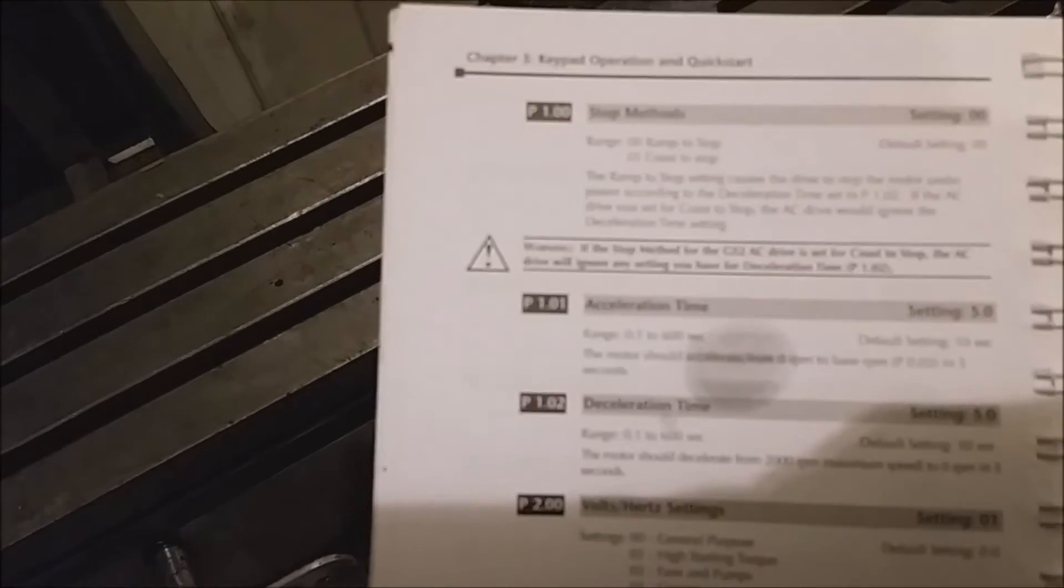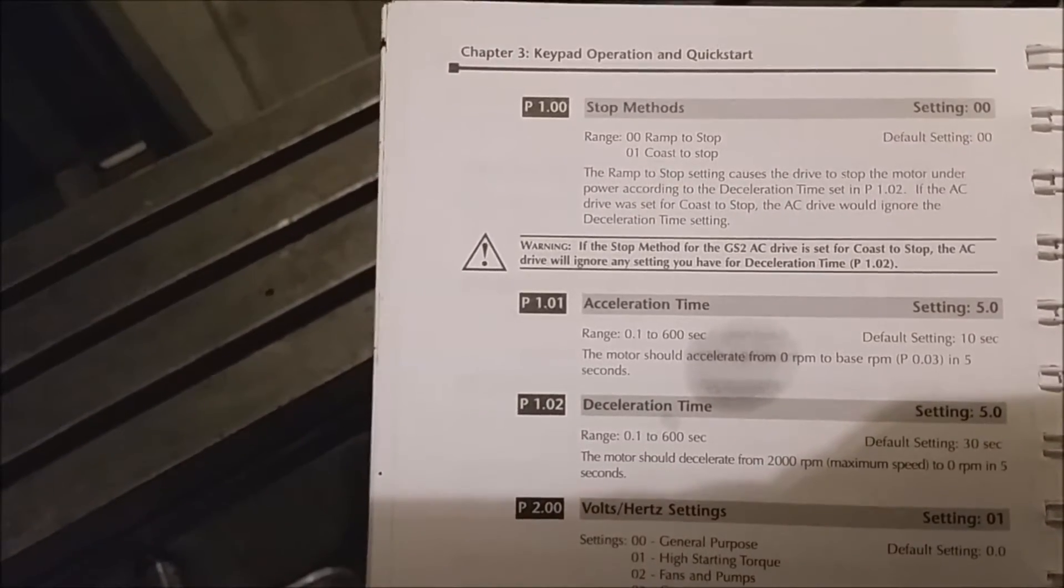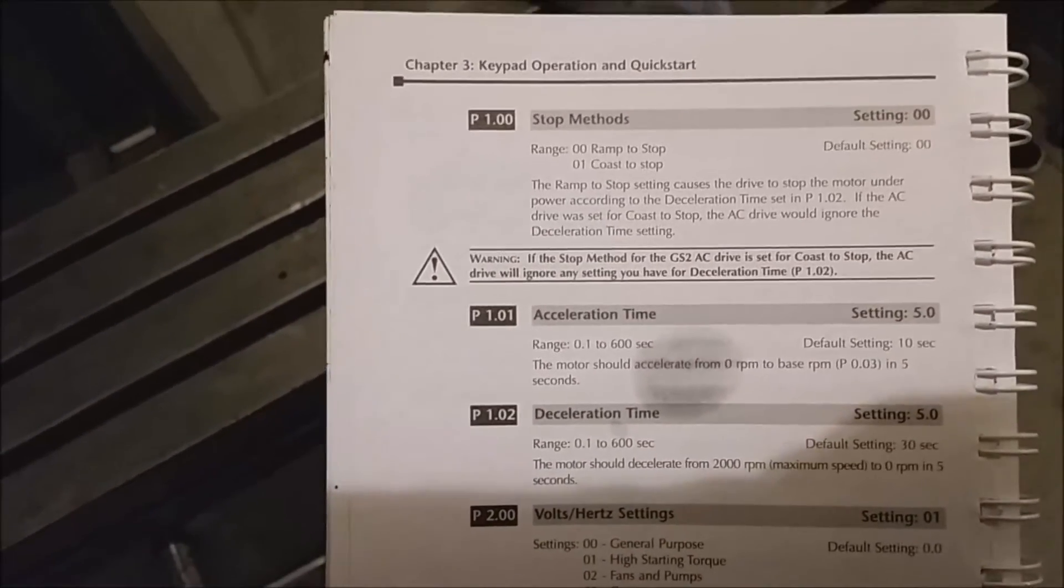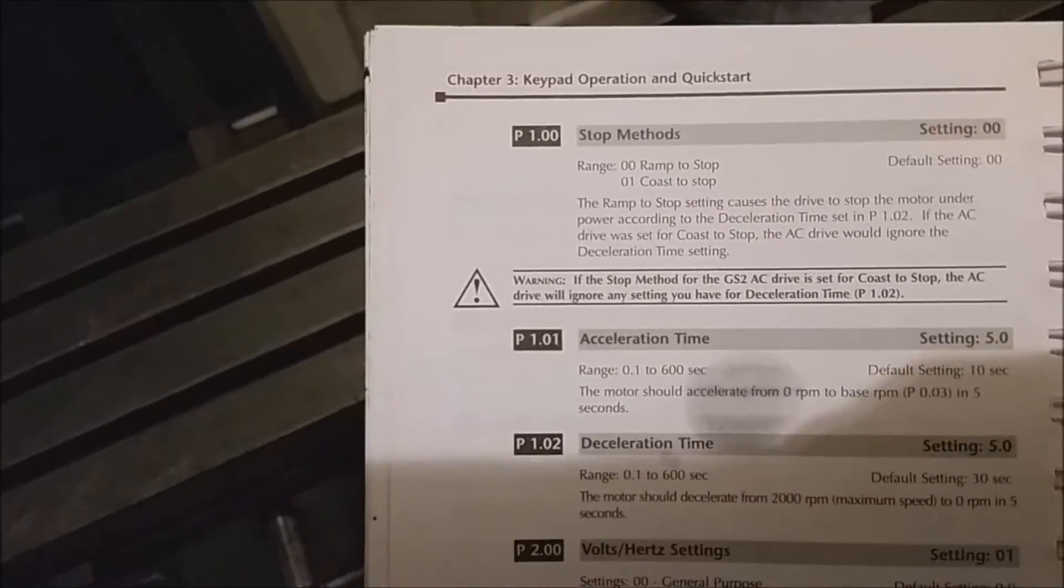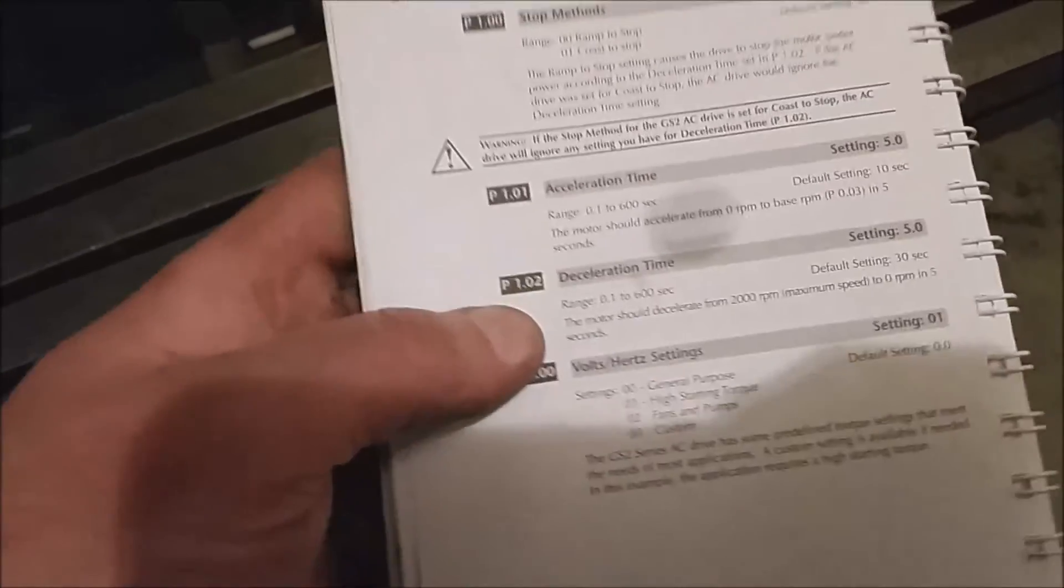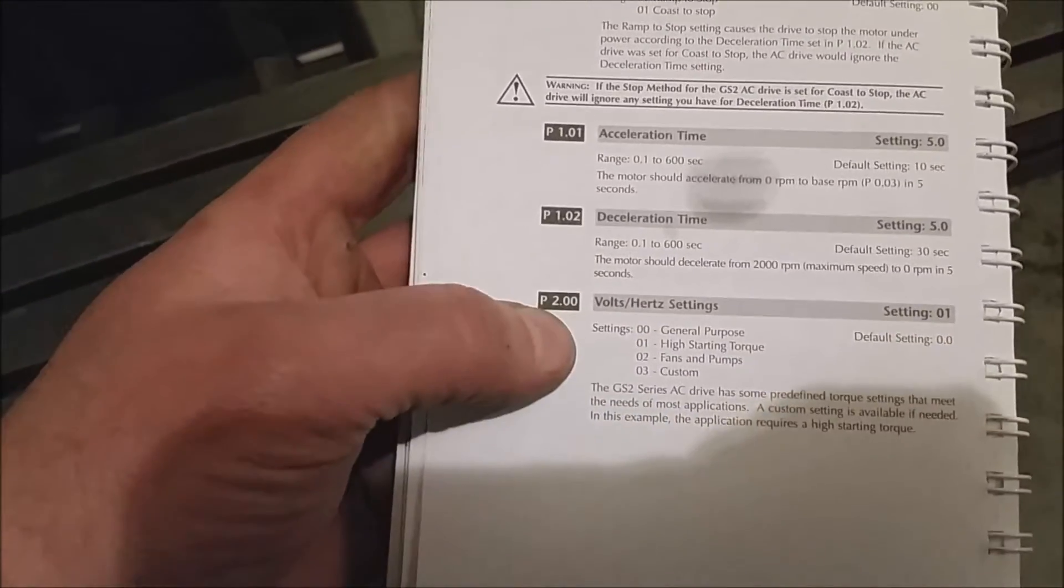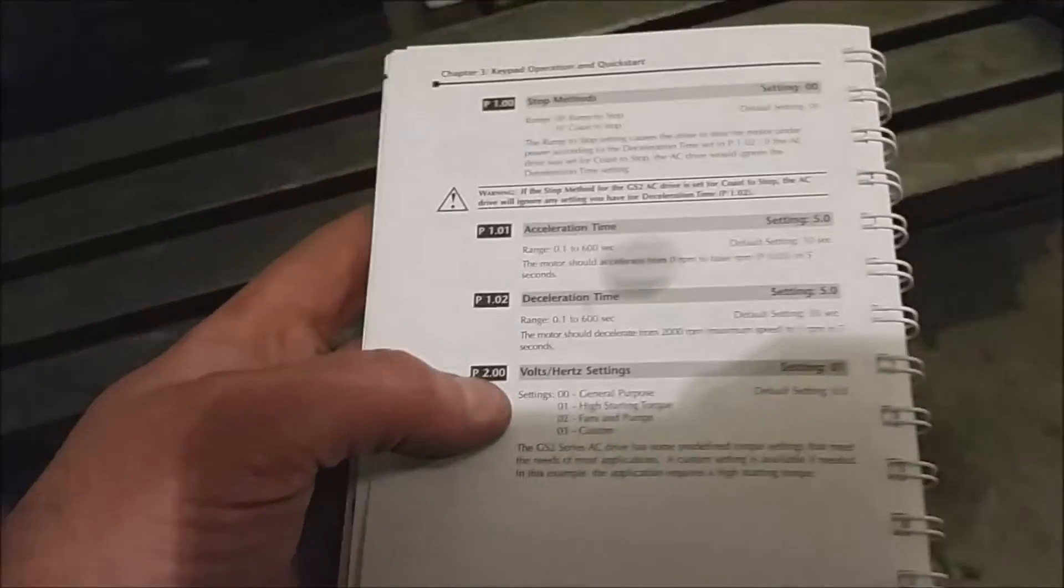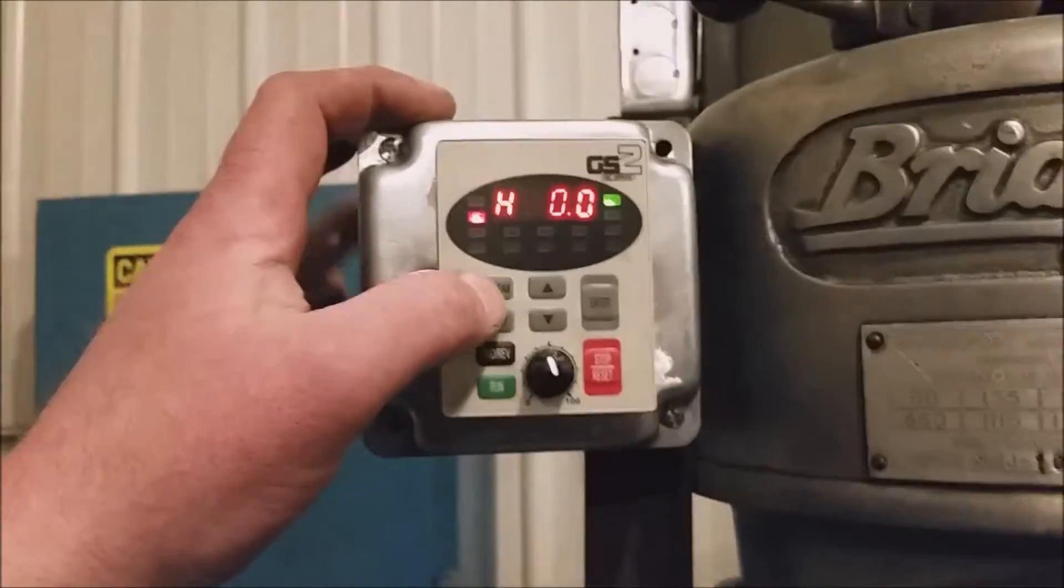You just walk down through those parameters. Then there's these parameters that you can set, like how you want it to stop. If you want it to stop by ramping to a stop, it can actually stop faster, especially if you have that braking resistor in there. Your acceleration time, your decel time, your volts per hertz setting, depending on what kind of torque requirements you have.